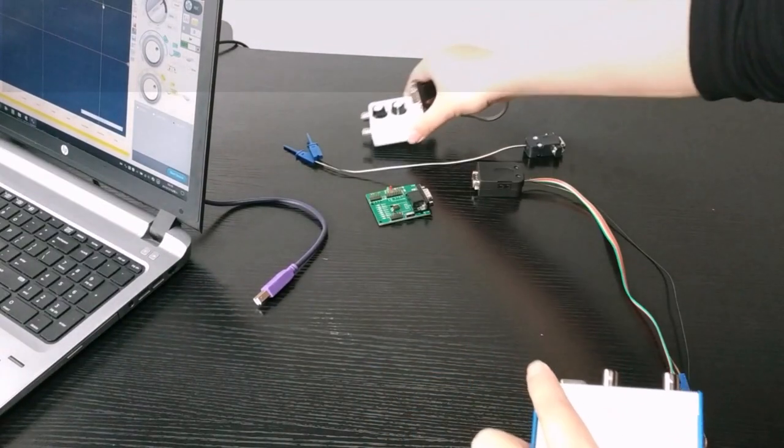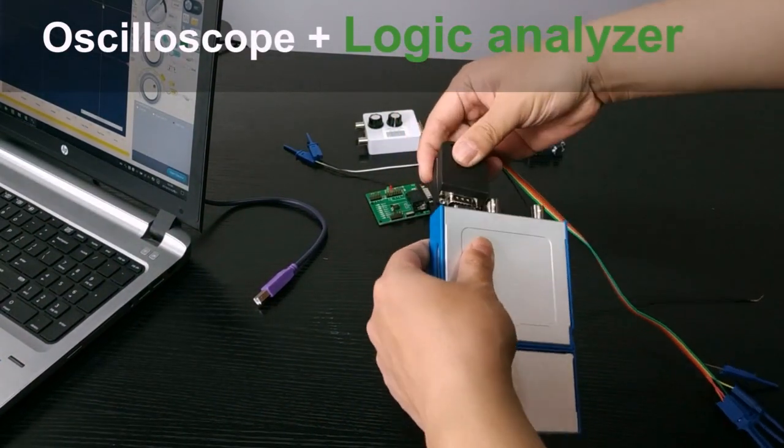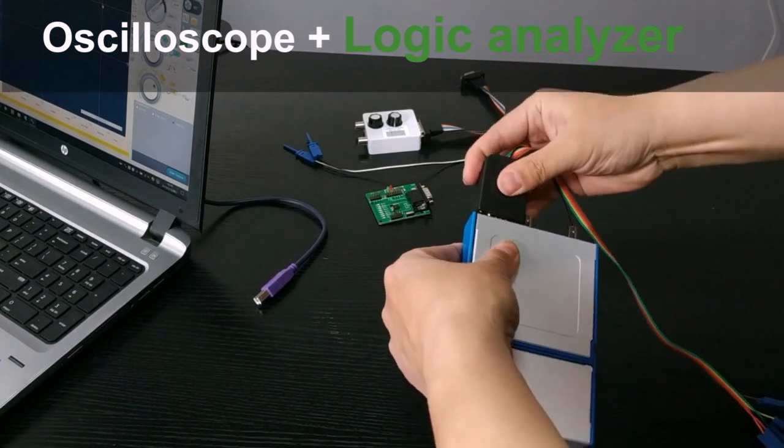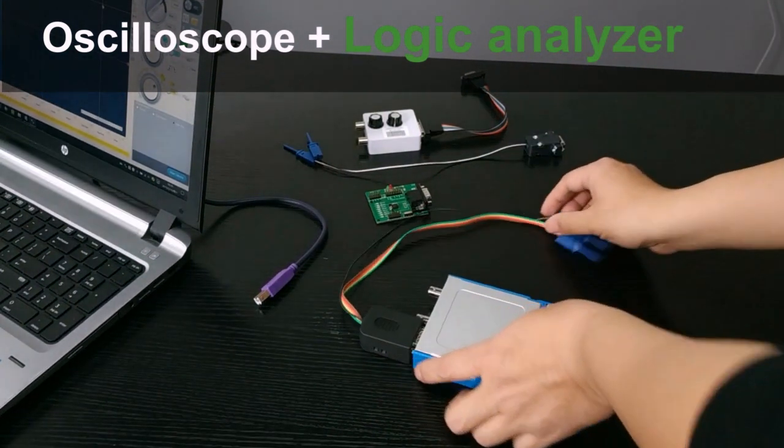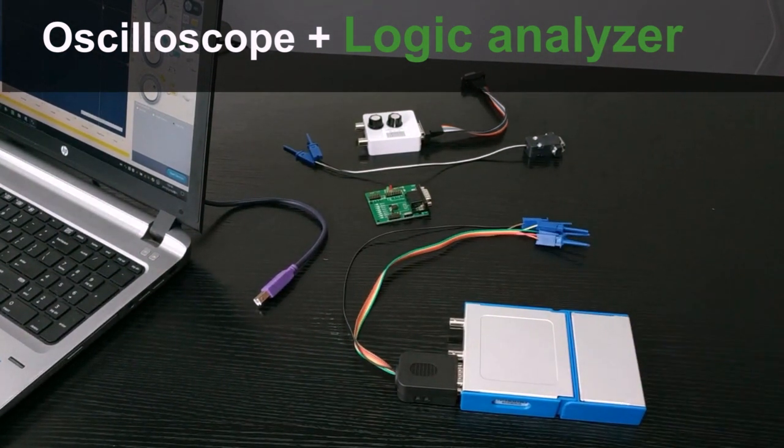Then this module is a logic analyzer. When we connect it, the result is quite compact. It has four channels and these four channels are synchronized with the analog channel A.